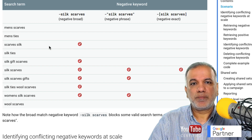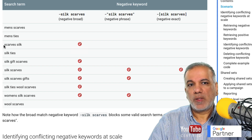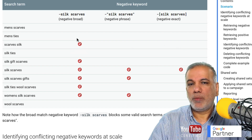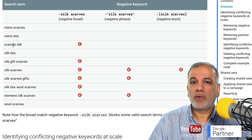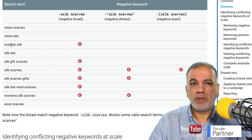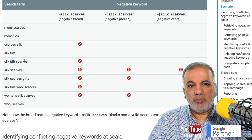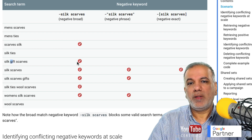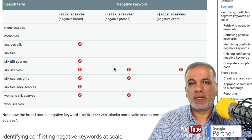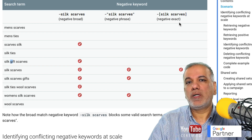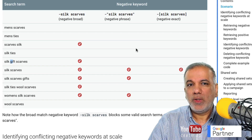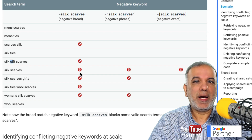'Scarves silk' is going to be blocked by the negative broad match — although it is in reverse order, it is being blocked only by broad match and not by phrase or exact match. For the broad match type, it doesn't matter which order the words are in, as long as all the keywords appear in that search term, your ad will be stopped and won't show. Even when there is a word between the two keywords — like 'gift' between 'silk' and 'scarves' — the broad match is still going to stop the ad. This gives you a really good idea of how the different match types can stop your ad showing, so you can direct traffic to the relevant ad group or campaign.